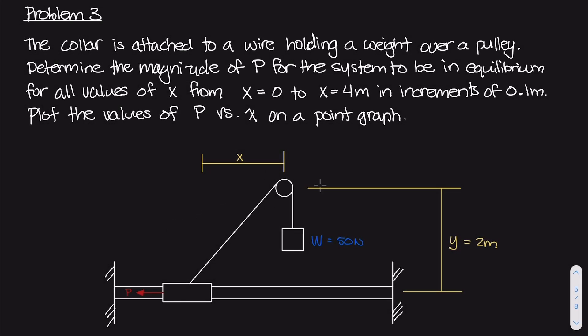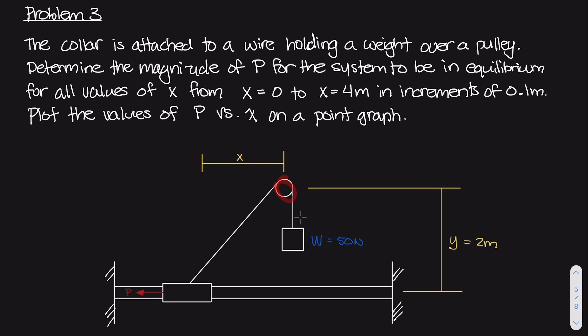Welcome to part two of this statics pulley problem. In the last video, we went over the problem statement as well as the algorithm that we're going to implement, and in this part we are actually going to write some code and implement that algorithm. As a quick refresher, we have this system with a pulley, a box or weight of 50 newtons on one side, and a cable attached to a collar that's free to move along a bar. There is a force P pulling on this collar to keep the entire system in equilibrium.